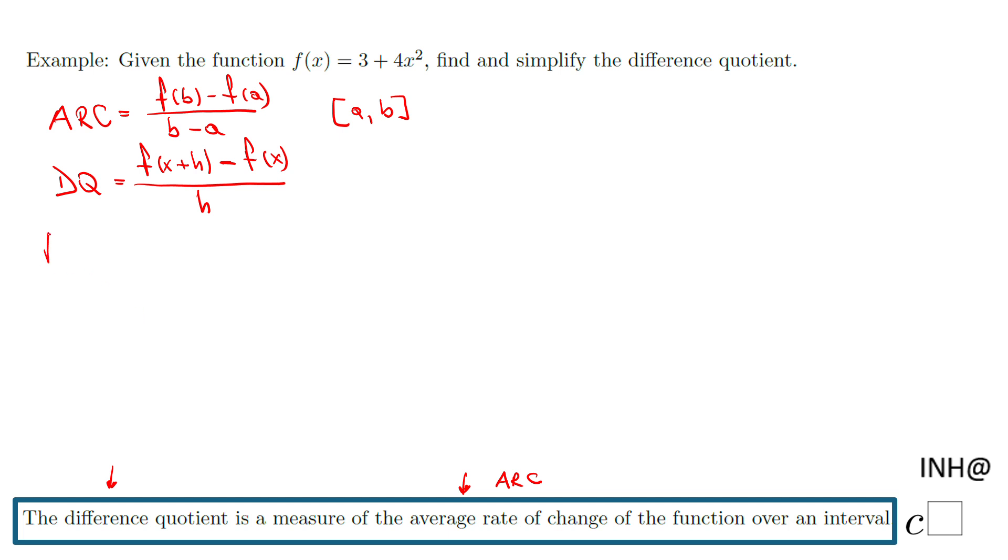For finding the difference quotient, my first thing will be to evaluate f(x + h) for our formula, and that will be 3 plus 4 times the quantity (x + h) raised to the second power. That (x + h) squared is x squared plus 2xh plus h squared using the special product.